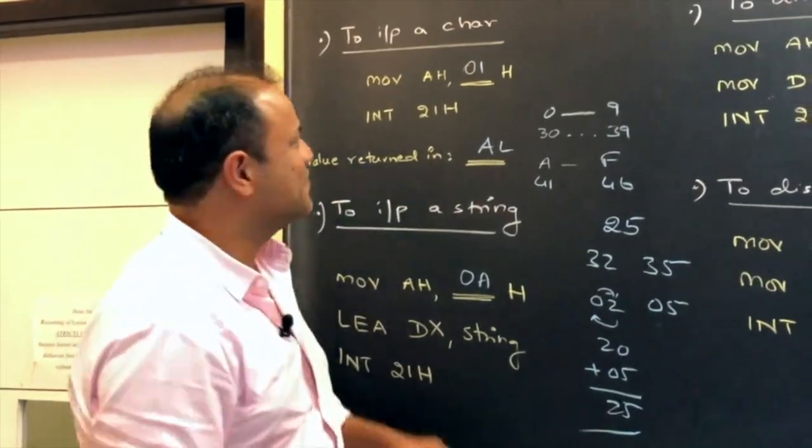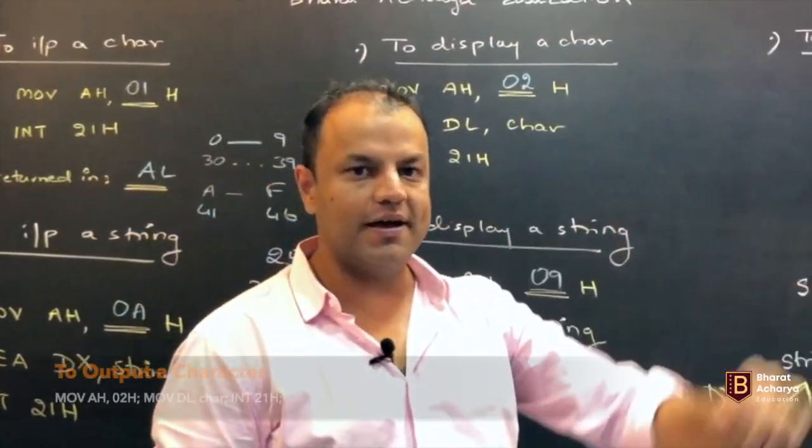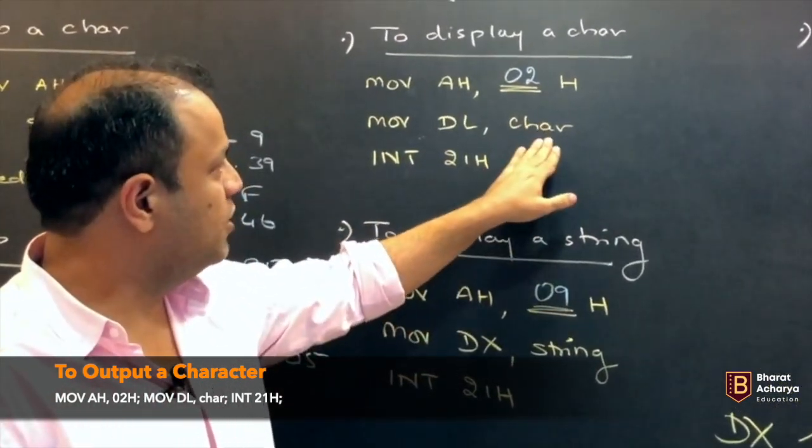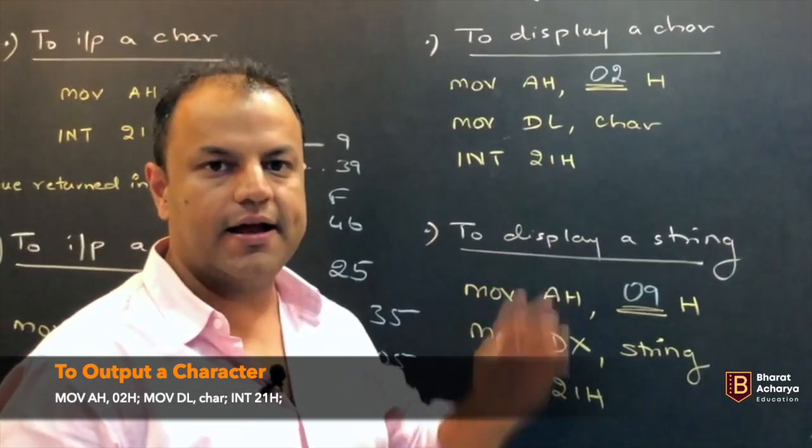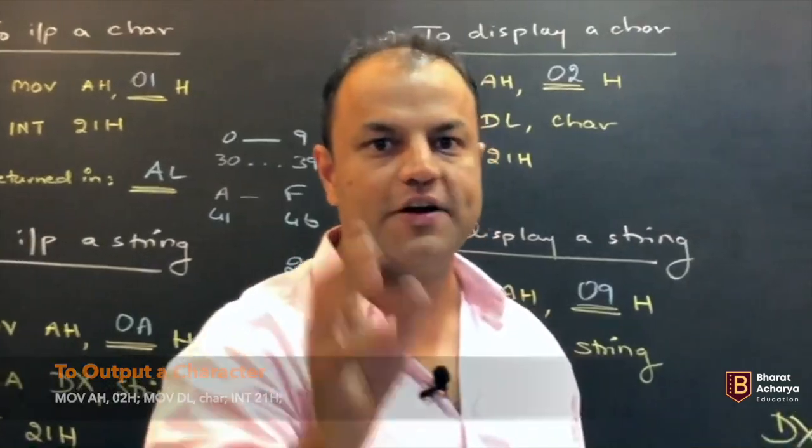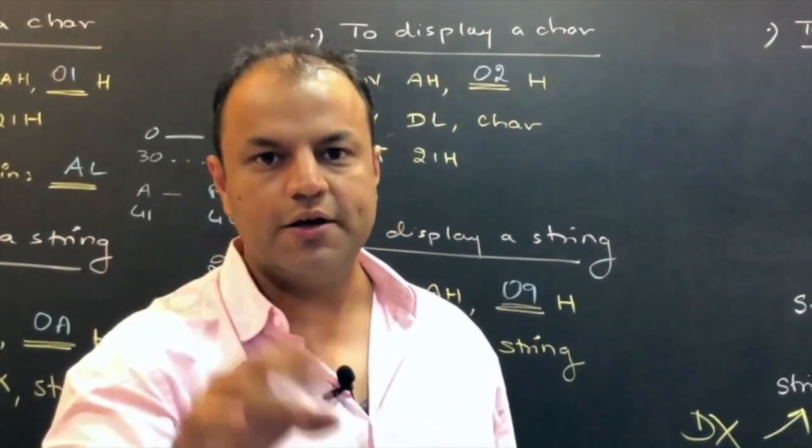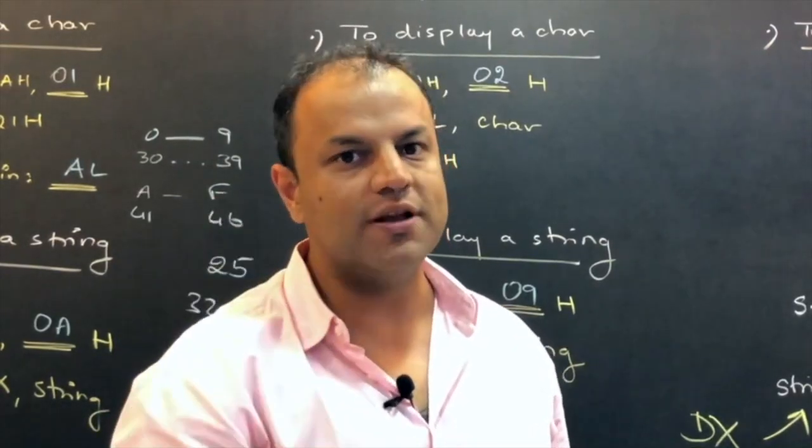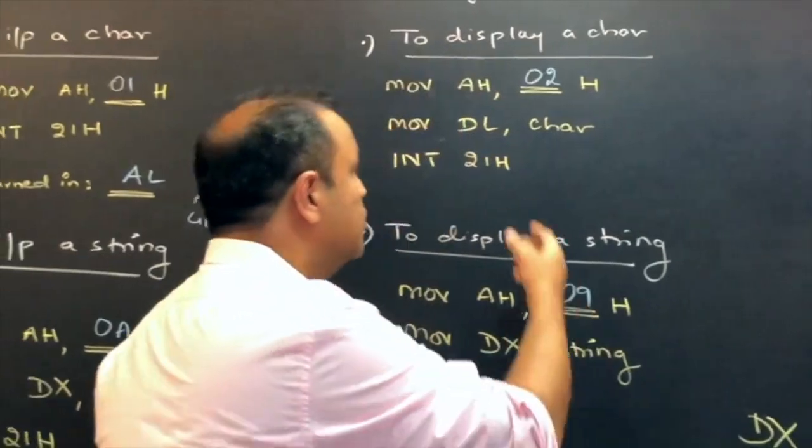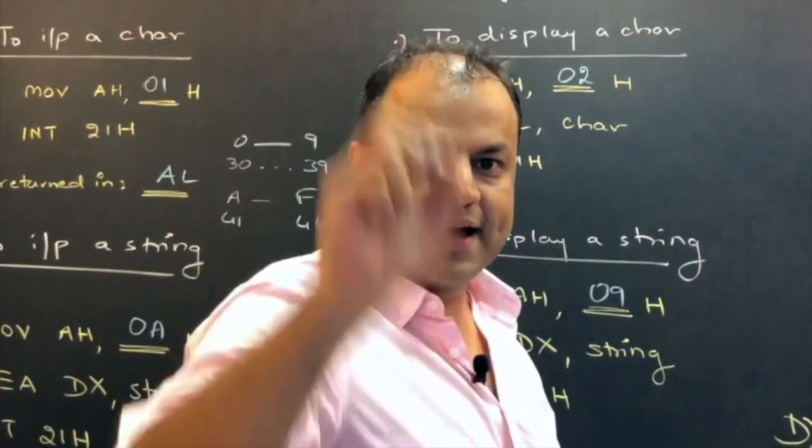Now, this is input character, input string. Now, the reverse of it. To display a character and to display a string. To display a character, move AH, 02. Put the character in DL and write INT 21. Of course, when I say put the character, you're not going to put 5. If you want to display 5, you won't put 5. You put the ASCII code of 5. That means, what do you do? You add 30 to it. So, again, you check the number. Whether it's 0 to 9, then you'll add 30. If it is more than 9, you'll add 37. Basically, you have to give out the ASCII value. So, move AH, 02, move DL, character INT 21. Will display that character on the screen.